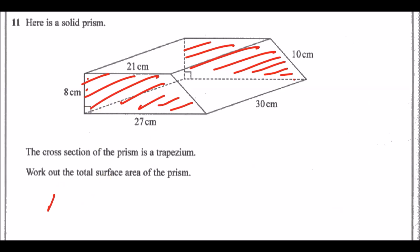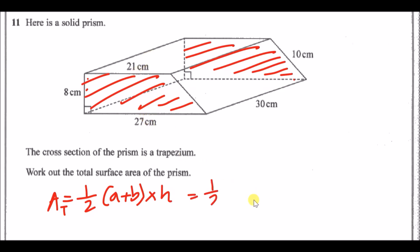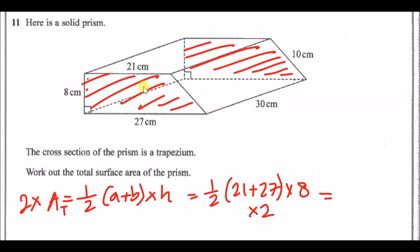The area of a trapezium is ½(a + b) × vertical height. The two parallel lengths are 21 and 27, and the vertical height is 8. So: ½(21 + 27) × 8. Because there are two trapeziums, double this result. Including the ×2, you get 384 cm².